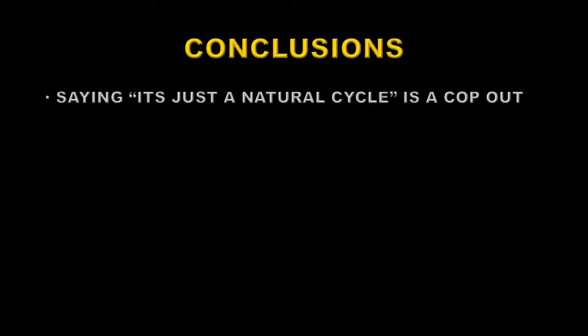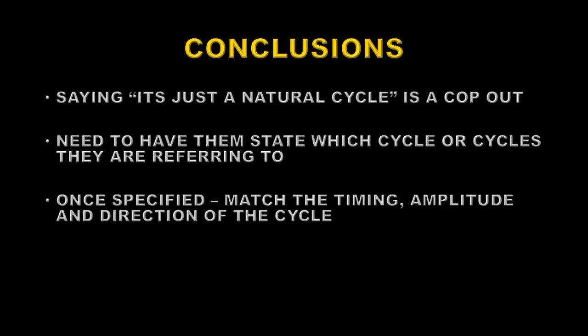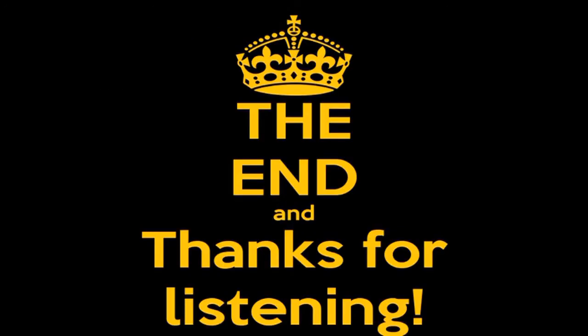Let's draw some conclusions. Just saying it's a natural cycle is a cop-out. When you hear somebody saying that, have them state which cycle or cycles they are referring to. Once they've specified that, match the timing, amplitude, and direction of that cycle with what we're seeing from global warming, and you will find that no natural cycle or any combination of them fits the global warming fingerprint. So if you hear somebody making this excuse, tell them they're full of nonsense and post a link to this video. Until next time, thanks for listening.